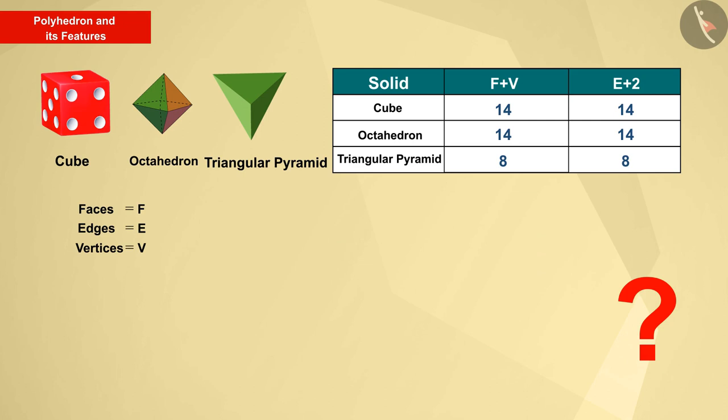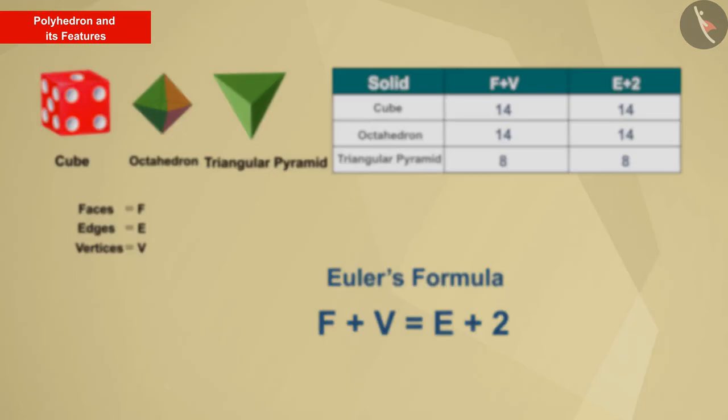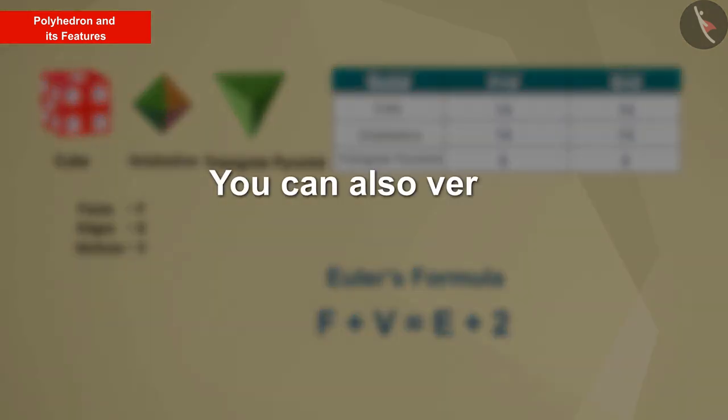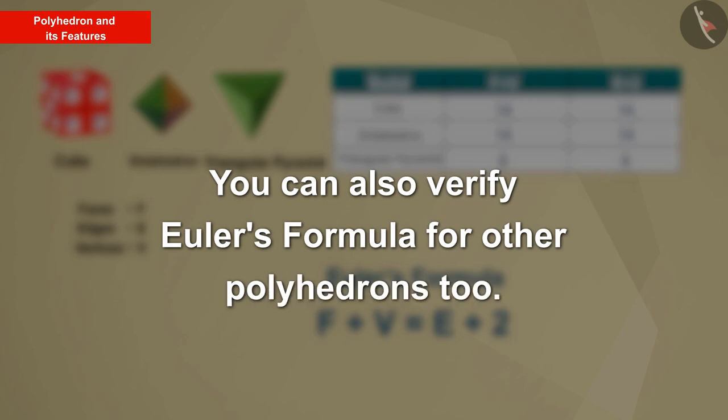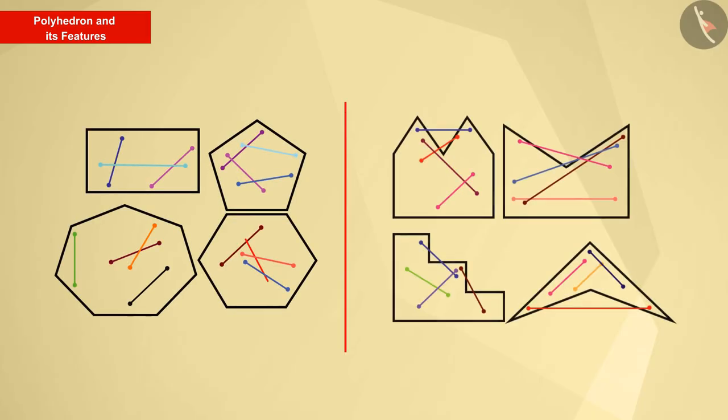Can you see any similarities? Well done. Here the sum of F and V and the sum of E and 2 is equal. This is true for all polyhedrons, which we call the Euler's formula, which is valid for all polyhedrons. You can check the Euler's formula by trying for other polyhedrons yourself.